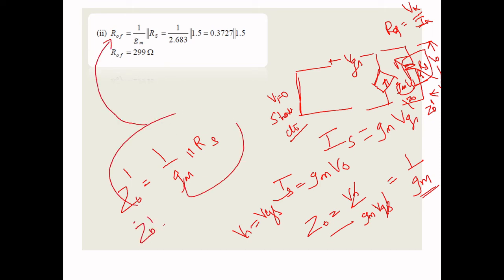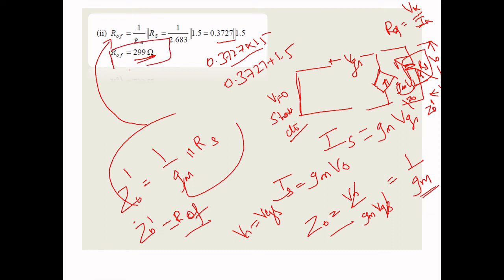Taking Z0' as R0F: R0F = (1/GM) || RS = (1/2.683) || 1.5 = (0.3727 × 1.5) / (0.3727 + 1.5) = 299 Ω. This is a simple method to find the voltage transfer function and R0F for the given problem.